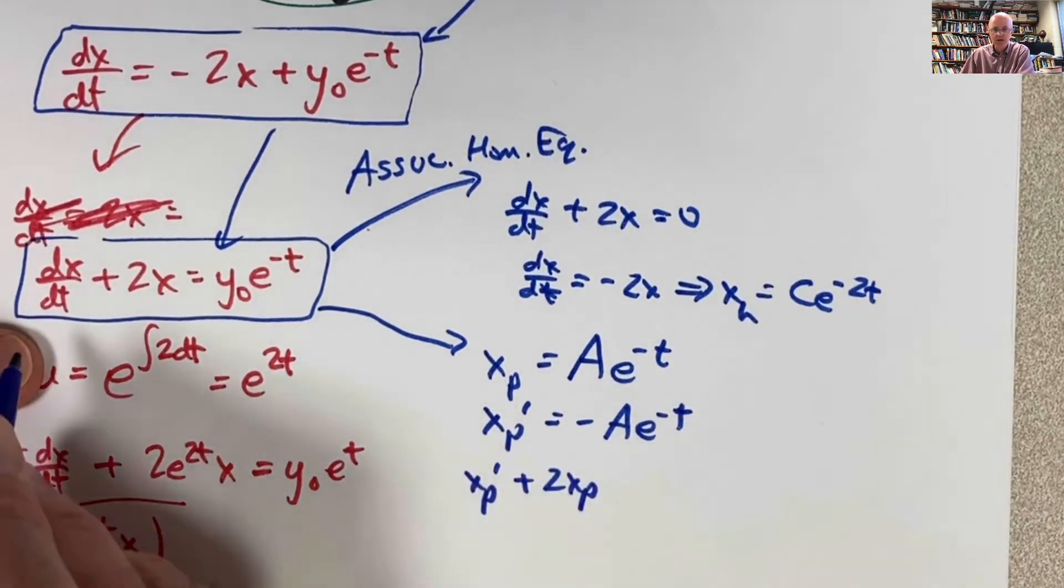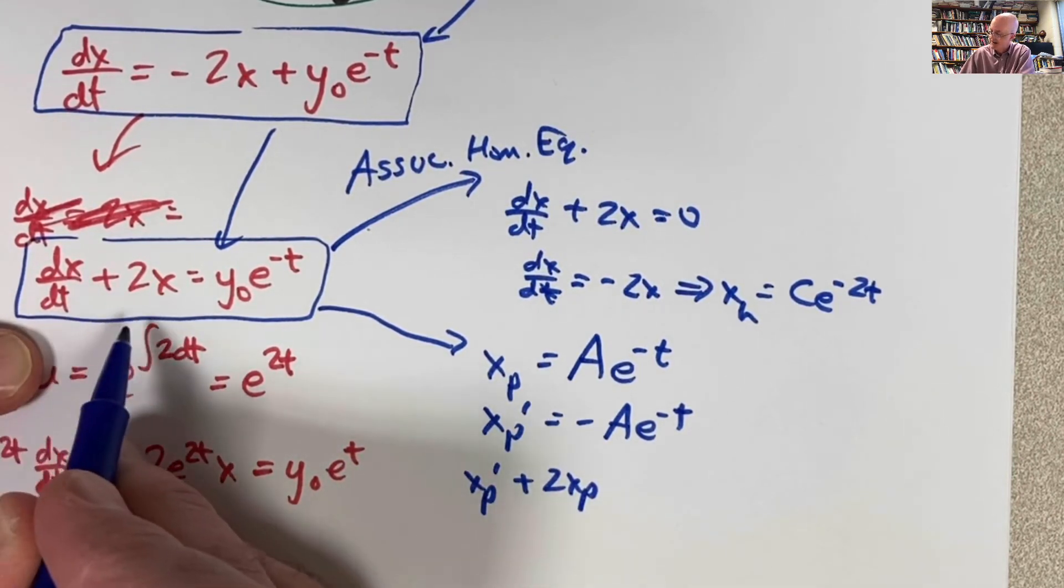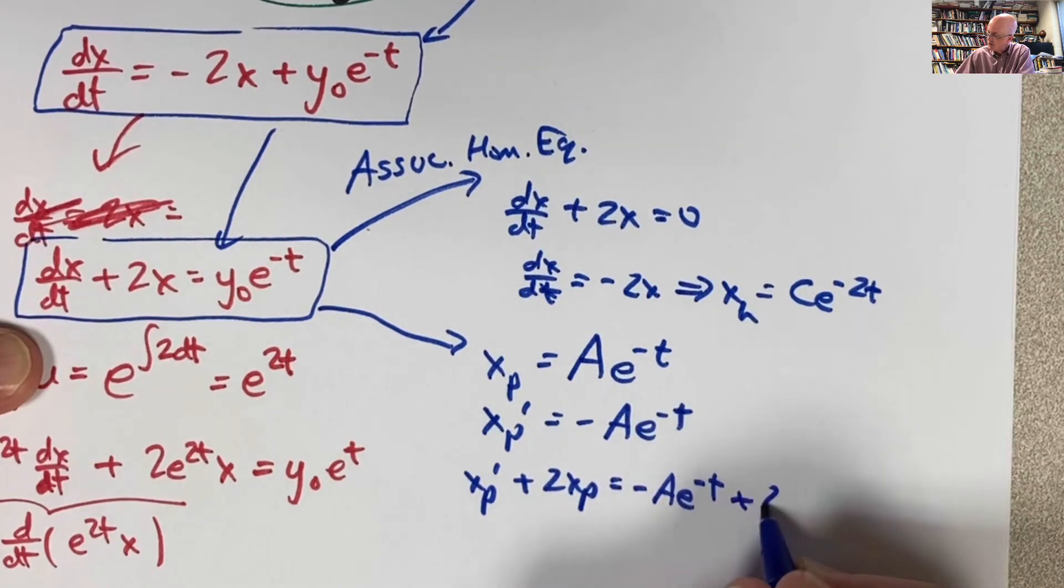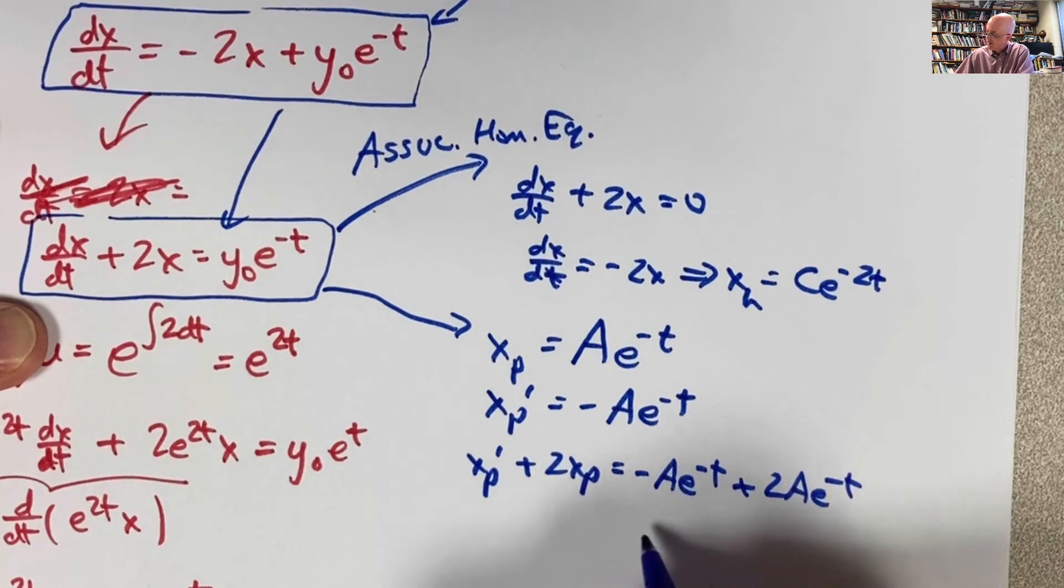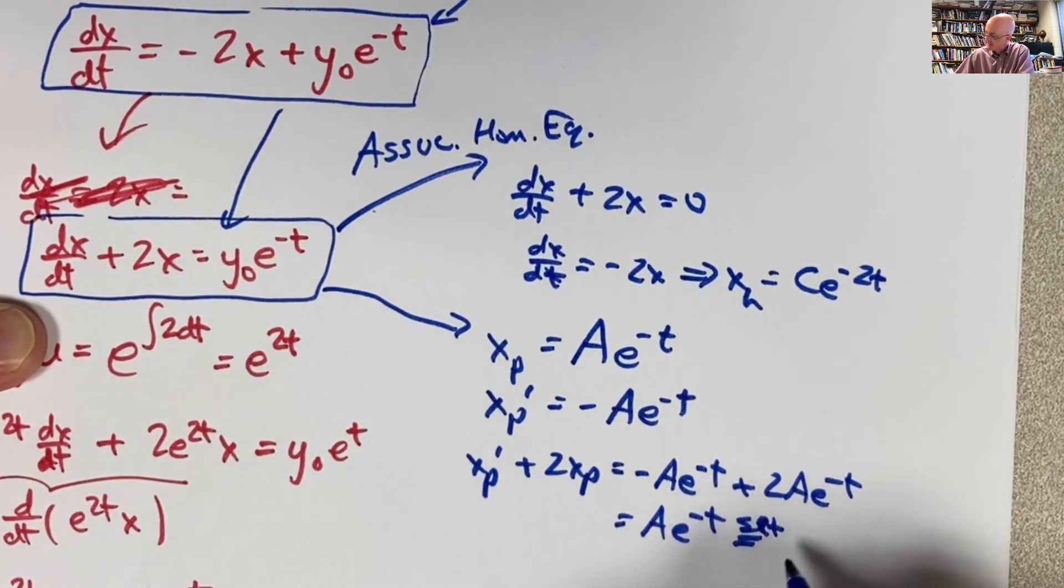Now compute xp prime plus 2 times xp. I'm substituting this function, this particular solution, or thing I hope is a particular solution, into the left-hand side here. What do I get? I get negative a e to the negative t plus 2 times the original function, 2a e to the negative t. That simplifies to a e to the negative t. And I want to set that equal to the right-hand side of the differential equation. This is supposed to say the word set there, y0 e to the negative t.